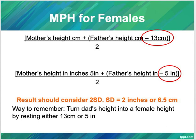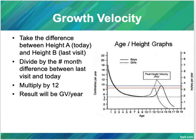The mid-parental height is always a range, considering two standard deviations. One standard deviation is approximately 2 inches or 6.5 centimeters. So if a female's mid-parental height is 64 inches (5 feet 4), the expected range is from 5 feet up to 5 feet 8. For growth velocity, we take at least two measurements — height A from the last visit minus height B from the previous visit — divide by the number of months between visits, then multiply by 12 to get growth velocity per year.